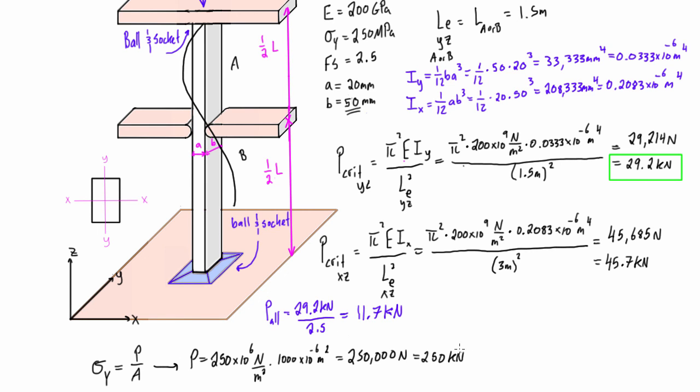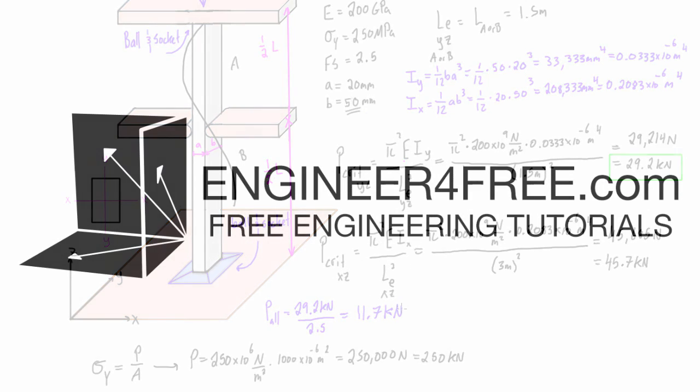So clearly, if we're getting yielding at an applied load of 250 kilonewtons, but we're getting buckling at 29.2 kilonewtons, then yielding is not the concern, buckling is. And the allowable load that we'll be able to safely apply to this column is going to be determined by buckling in the YZ-plane, and it is going to be 11.7 kilonewtons.